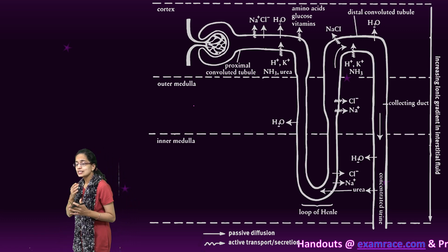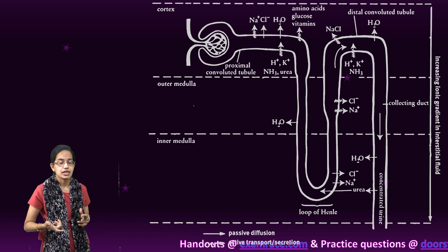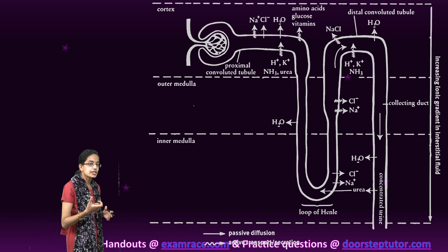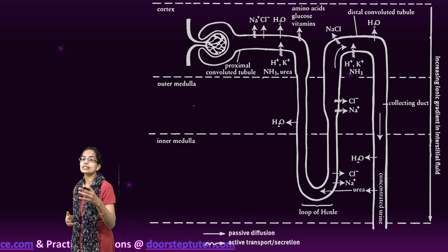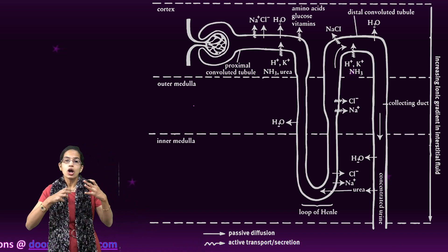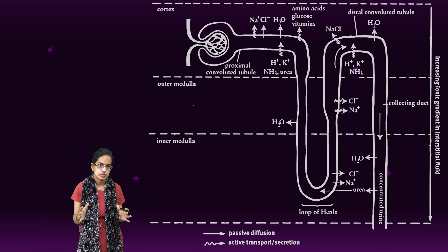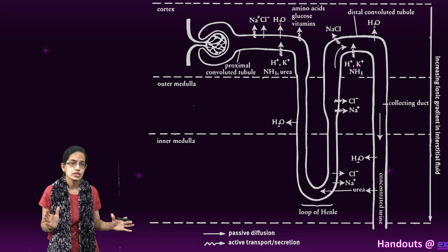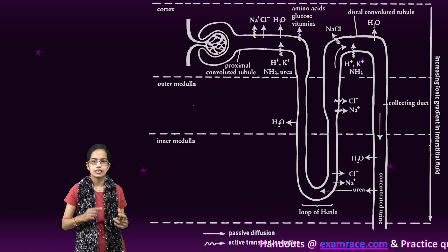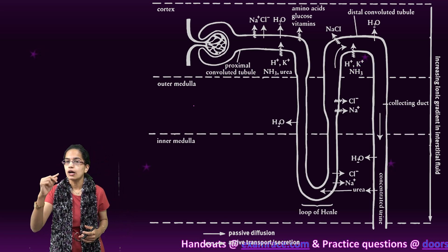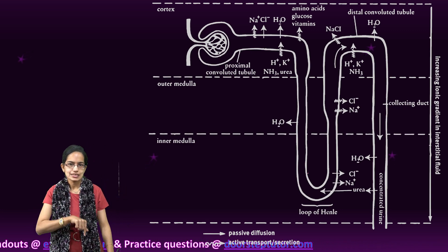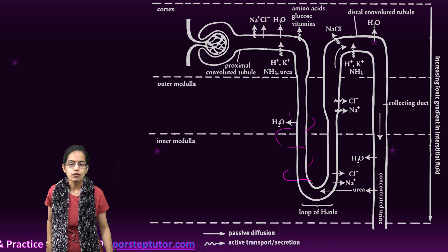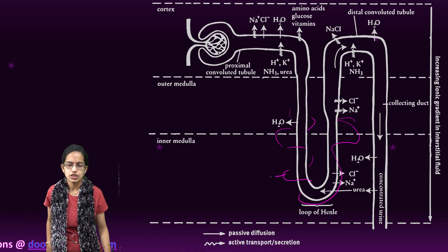Understanding the concentration of filtrate is very important. The kidney produces urine which is four times more concentrated than the initial filtrate. This process of concentration occurs through a counter-current mechanism. The nephron is surrounded by capillaries known as the vasa recta, which specifically surround the loop of Henle.